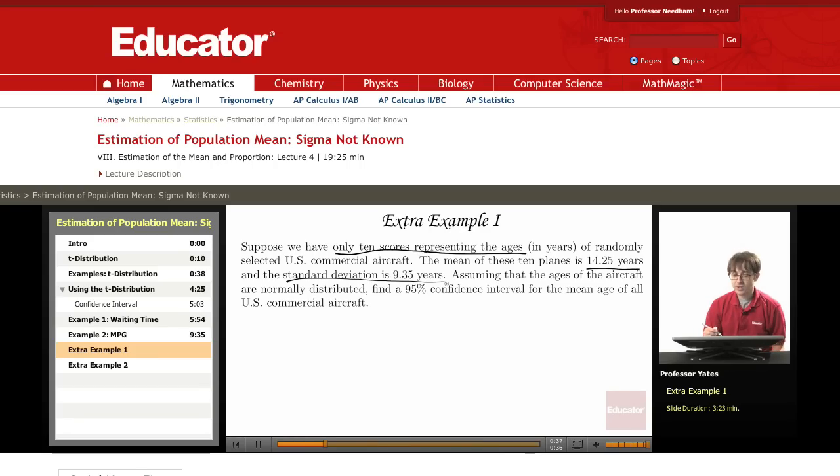Assuming that the ages of the aircraft are normally distributed, so we're sampling from a normal distribution, find a 95% confidence interval for the mean age of all commercial aircraft.